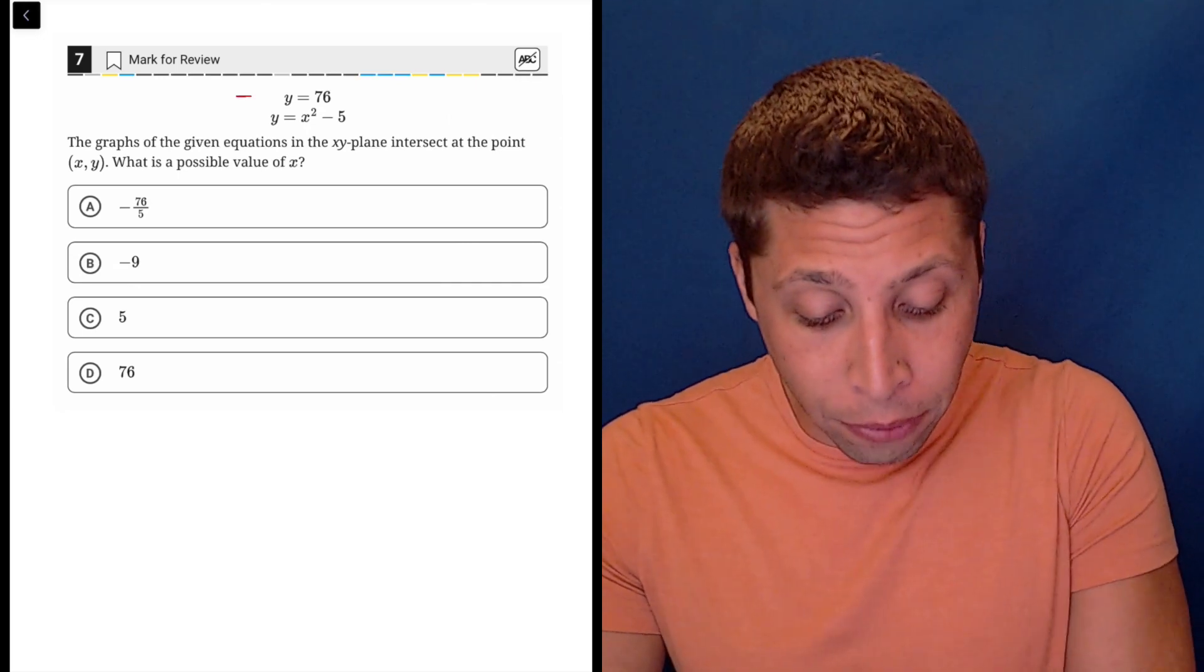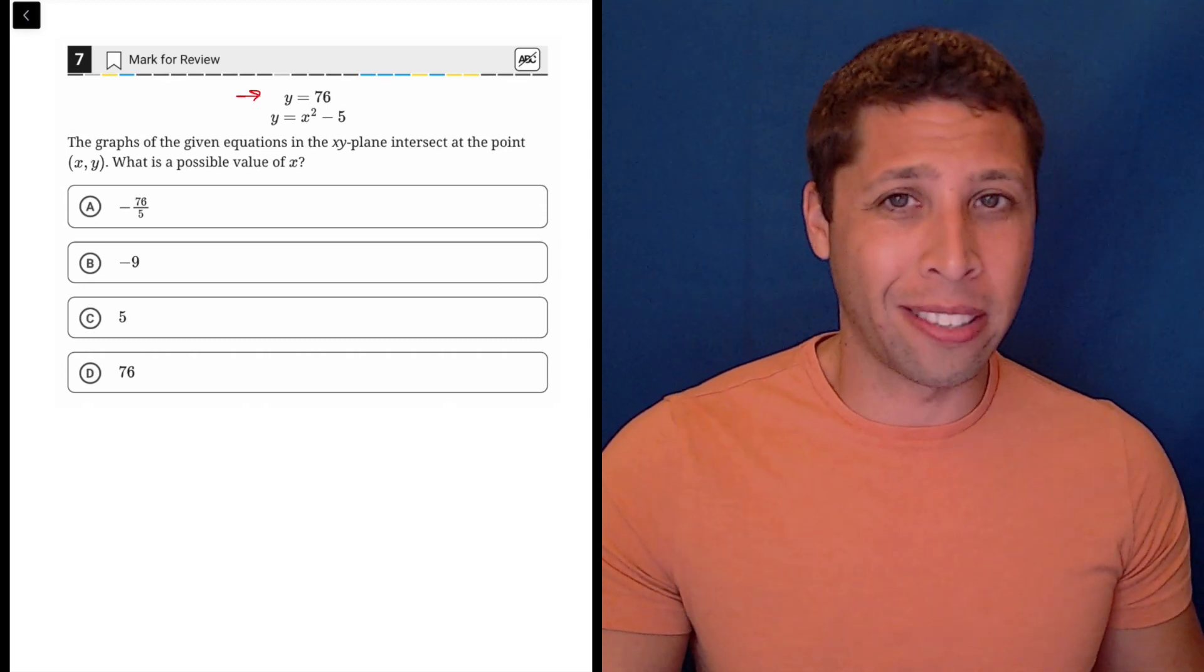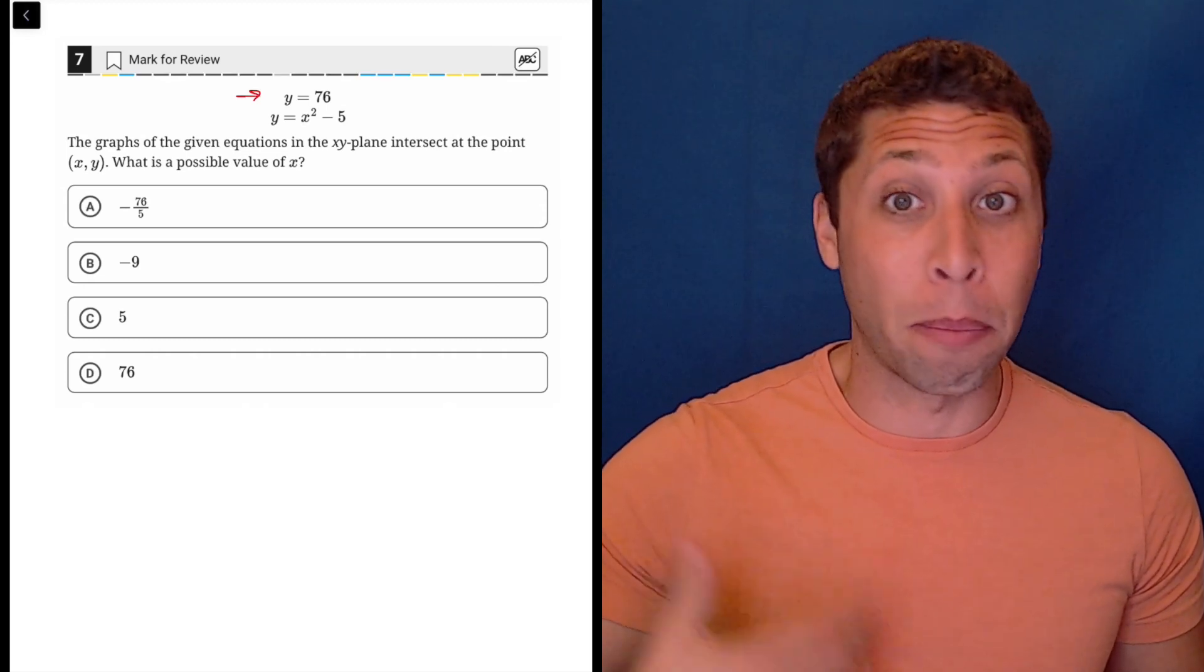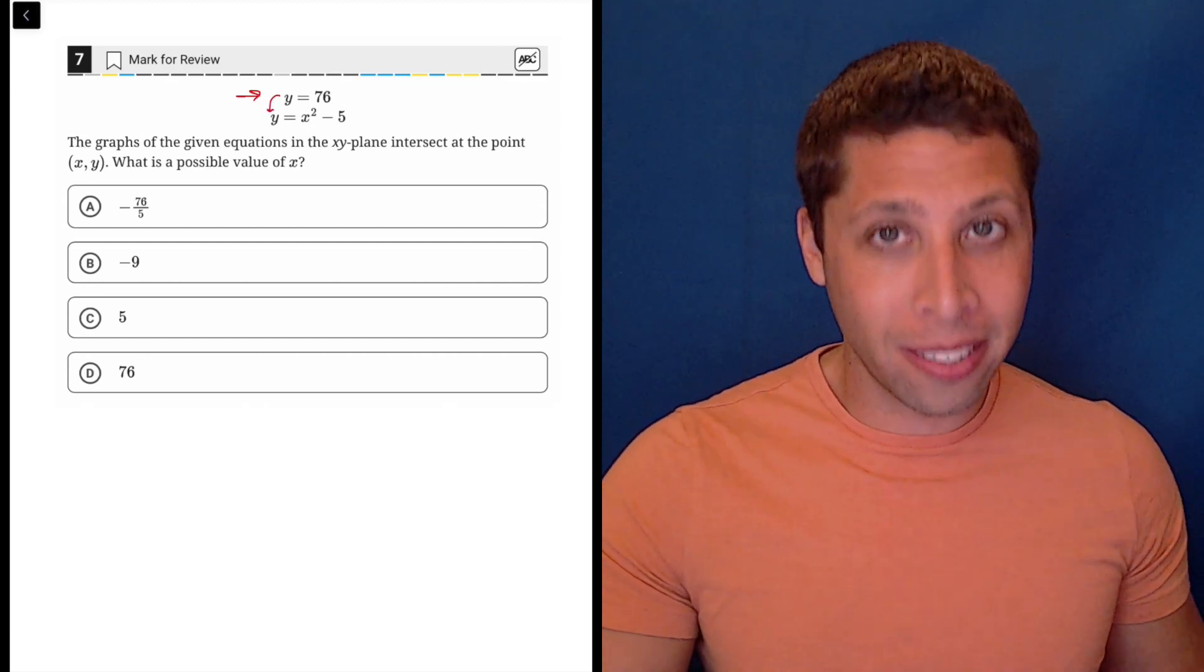The reason is that the first equation is barely an equation at all. Y equals 76, it's written as an equation, but really this is just like a point that we can plug in. So if we start to think of it that way, this doesn't become a system anymore.